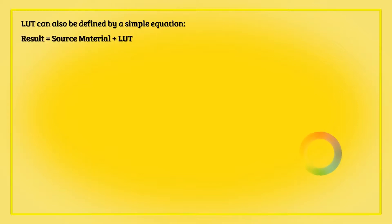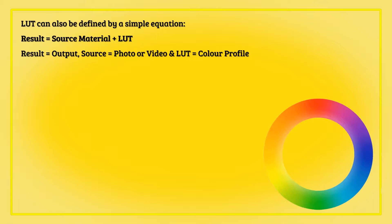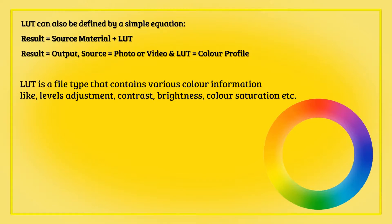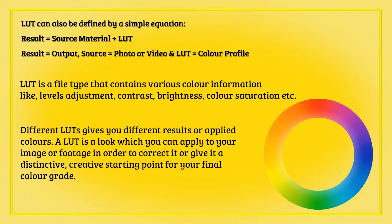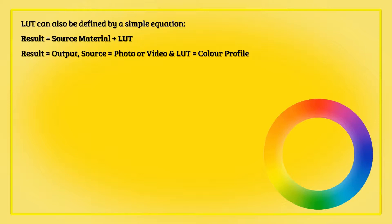Result equals source material plus LUT. The LUT in this case represents the difference needed to make up between the result and the source material. Source material can be your image or video. In simple words, a LUT is a file type that contains various color information like levels adjustment, contrast, brightness, color saturation, etc. Different LUTs give you different results or applied colors. A LUT is a look which you can apply to your image or footage in order to correct it or give it a distinctive creative starting point for your final color grade.